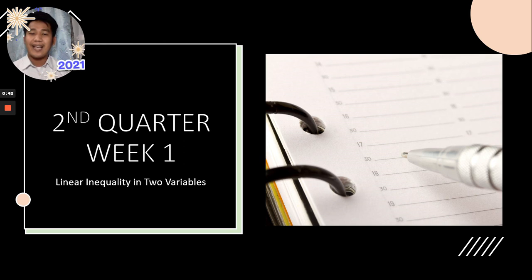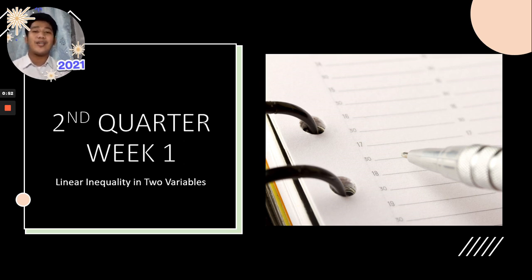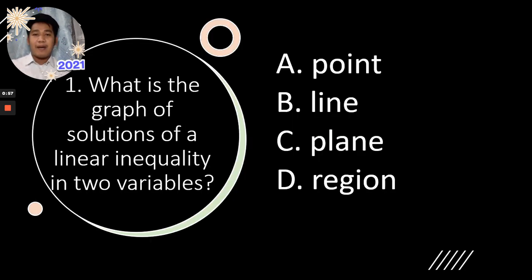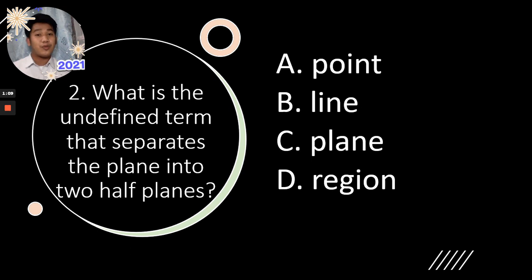The following slides are the expected lessons you can expect to learn. These are included in your pre-assessment. You will learn about this question: What is the graph of solutions of Linear Inequality in Two Variables? Is it a point, line, plane, or region? Another question is: what is the undefined term that separates the plane into two half planes?